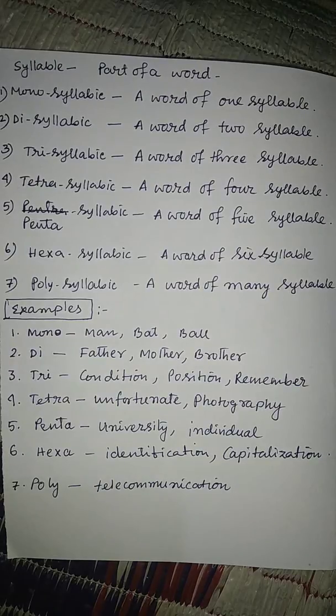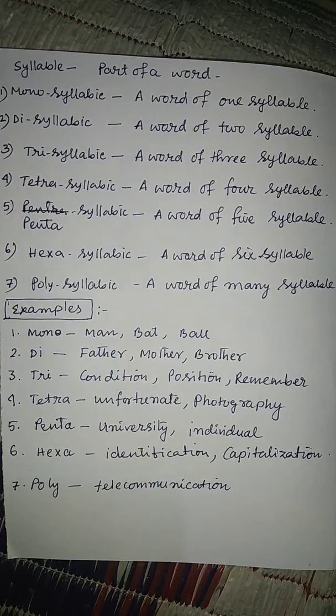Examples. Monosyllabic words: man, bat, ball, die. Disyllabic words: father, mother, brother.